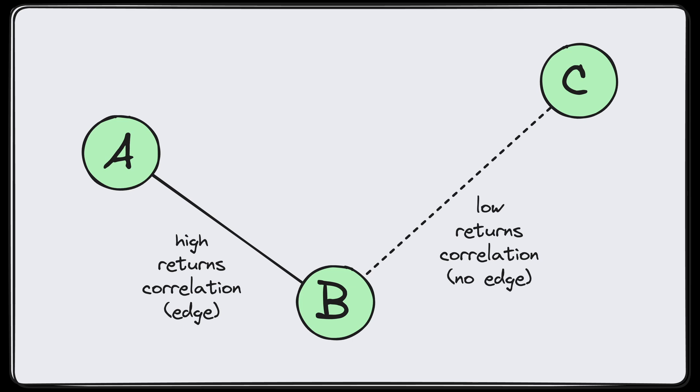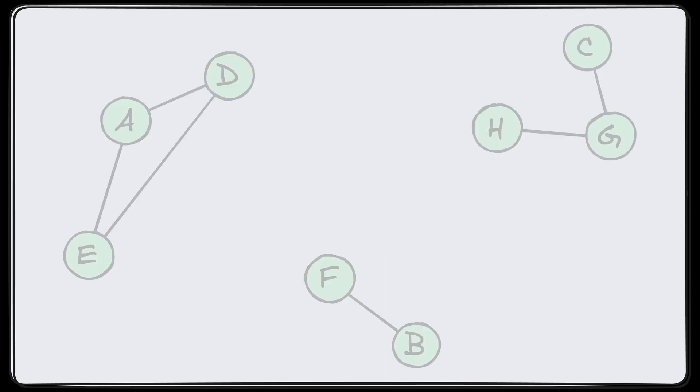After this first phase where we've created that correlation graph, we end up with a graph with some number of connected components that looks like this, for example. We see in this graph there are three connected components. We pick the best ticker from each connected component—the one that has the highest Sharpe ratio, as long as that ratio is at least 0.25 to make sure that it's some notion of goodness.